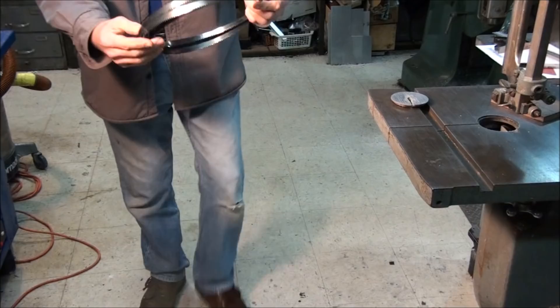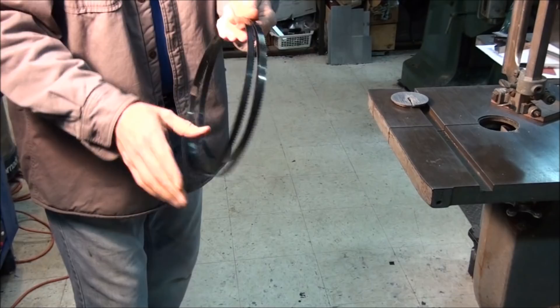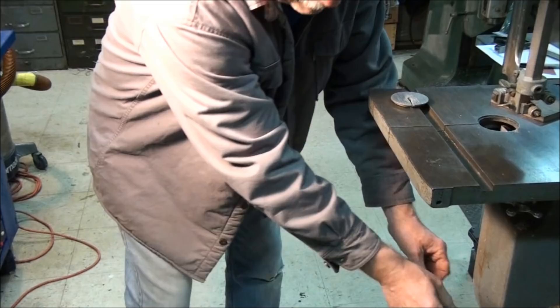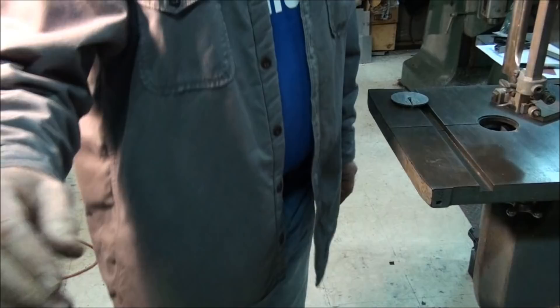So that's two ways to coil a bandsaw blade. Handy thing to know and then you can just hang it on the side of your bandsaw and store them away nicely. Alright, back to sawing.